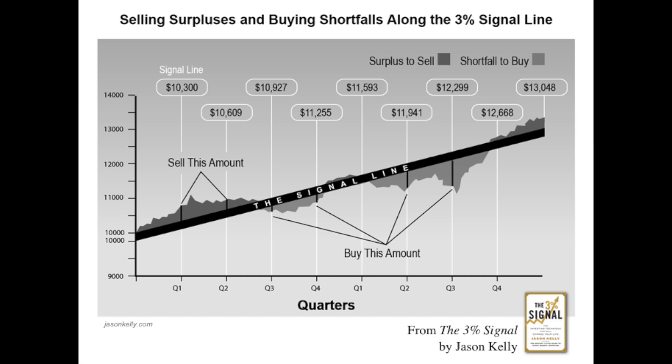You can see in the beginning — Q1, Q2, and into Q3 — the stock market was doing well. It was rising above the signal line, and we would sell those respective amounts at the end of Q1 and Q2. Now later, looking into the second year, you can see the stock market over Q1, Q2, and into Q3 fell down below the signal line. So you see indicated on the chart that shortfall below the signal line. That's how it works — very straightforward, isn't it?